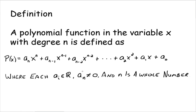The coefficients are real numbers. This first coefficient, a sub n, cannot be equal to 0. And n, your exponent, has to be a whole number — so 0, 1, 2, 3, 4, 5, and so on. Each of these degrees decreases by 1 from the previous one.